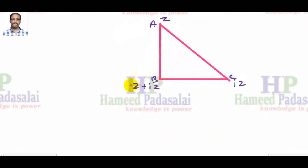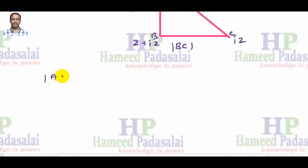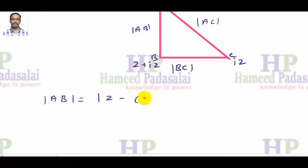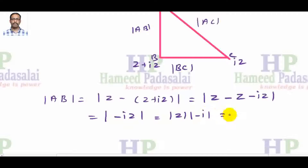Now we have to work with this complex number. We compute the modulus of AB, which is |Z − (Z+Iz)|, and modulus of BC, which is |(Z+Iz) − Iz|, and then modulus of AC, which is |Z − Iz|.